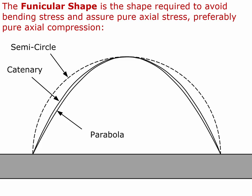The funicular shape is the shape required to avoid bending stress and assure pure axial stress in the material in the dome, preferably pure axial compression. The funicular shape for a dome is different from the funicular shape for an arch because the load distribution on a dome is different from the load distribution on an arch.